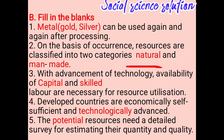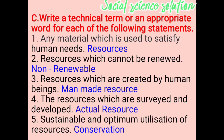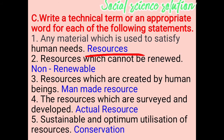Technical terms: Any material which is used to satisfy human needs is called a resource. Resource which cannot be renewed is called non-renewable resource. Resources which are created by human beings are called man-made resources. Resources which are surveyed and developed are called actual resources. Sustainable and optimum utilization of resources is called conservation.